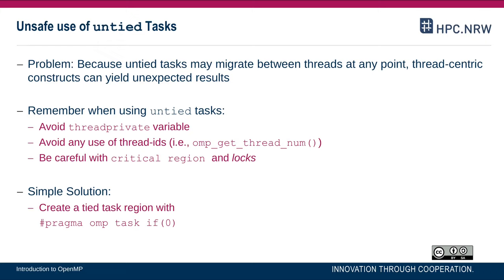If you need a tied region within an untied task, you can create another task with if(0) or if(false). That means there will be a tied task within the untied task that is not allowed to be deferred — if the if-expression evaluates to false, it executes immediately. Inside that, you can make use of any constructs that require a thread ID to be persistent during execution of the task region. However, if you have anything like that, I would recommend avoiding untied altogether.